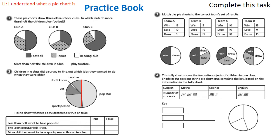Question three. Match the pie charts to the correct team's set of results. So you've got team A, won 15, lost 10, drew 5. Whereas team B, won 5, lost 10, drew 15. Team C, they did exactly the same, 10 for each. And then team D, they didn't lose any, they either only won or they drew.